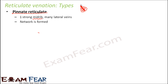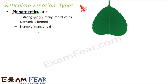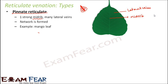In pinnate reticulate, there is one strong midrib which is distinctly visible, and from that midrib many lateral veins emerge, forming a network. An example of pinnate reticulate is a mango leaf. In the mango leaf, you can prominently see the midrib in the center, and from it the lateral veins branch out. The midrib and lateral veins together form a network.